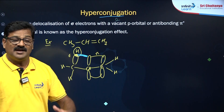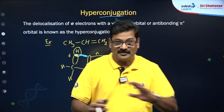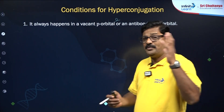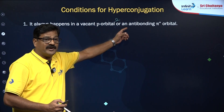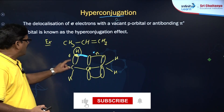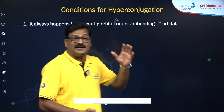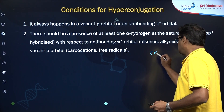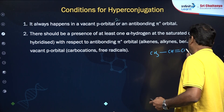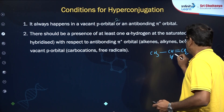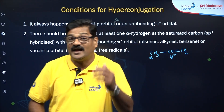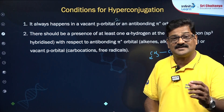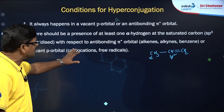What are the conditions required for hyperconjugation? It always happens in a vacant p orbital with respect to anti-bonding pi orbitals. There should also be at least one alpha hydrogen. The carbon attached to the SP2 carbon is called the alpha carbon, and the hydrogens attached to the alpha carbon are called alpha hydrogens. At least one alpha hydrogen must be present for hyperconjugation to occur.